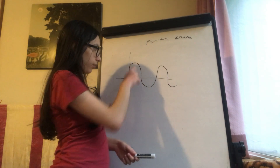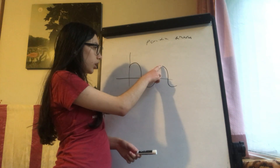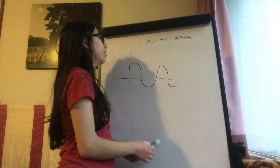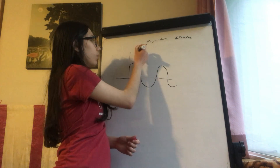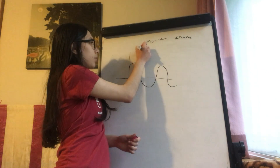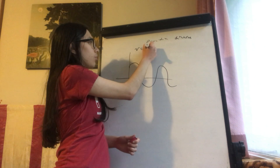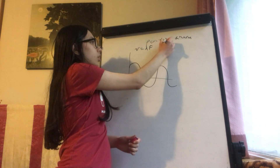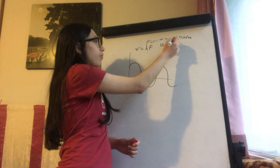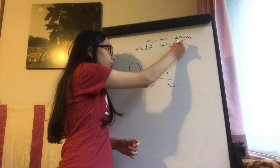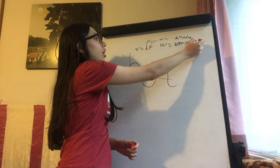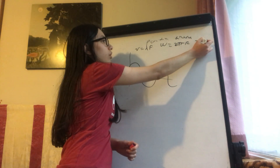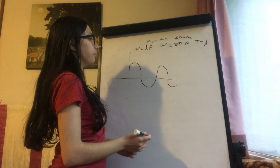We already know that from here to here is the wavelength, the frequency, speed, etc. Let me put the formulas: velocity equals wavelength times frequency; remember that the angular frequency is 2π times the frequency; and the period is 1 over the frequency.